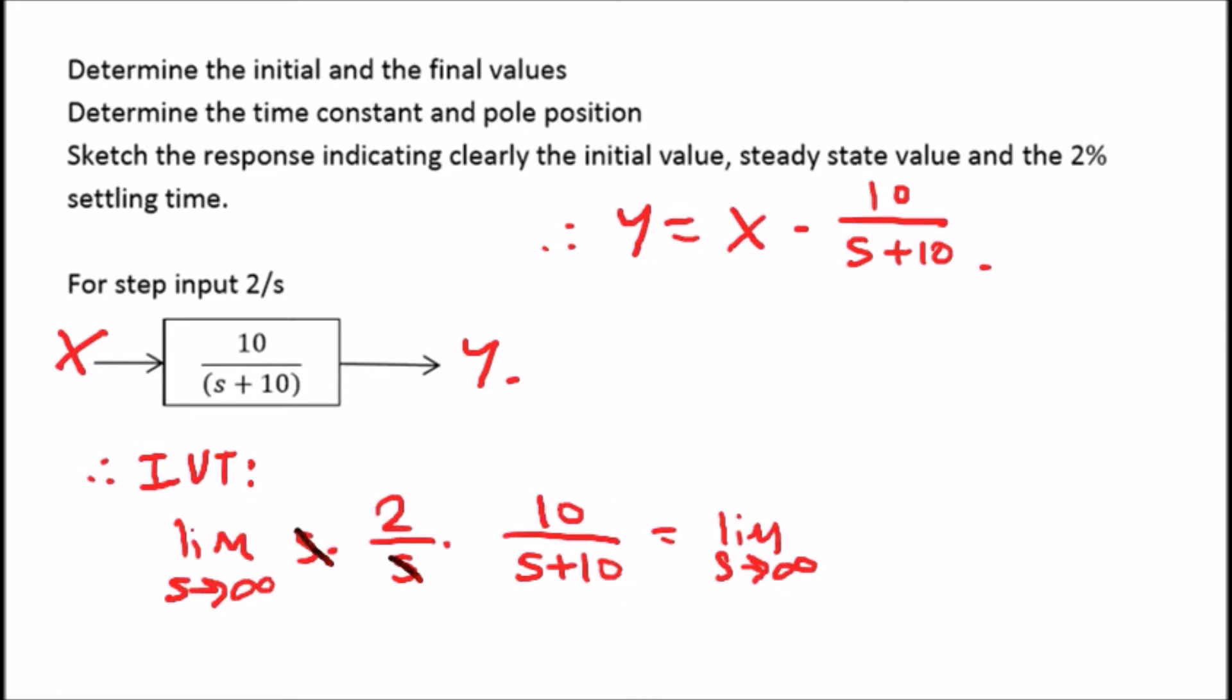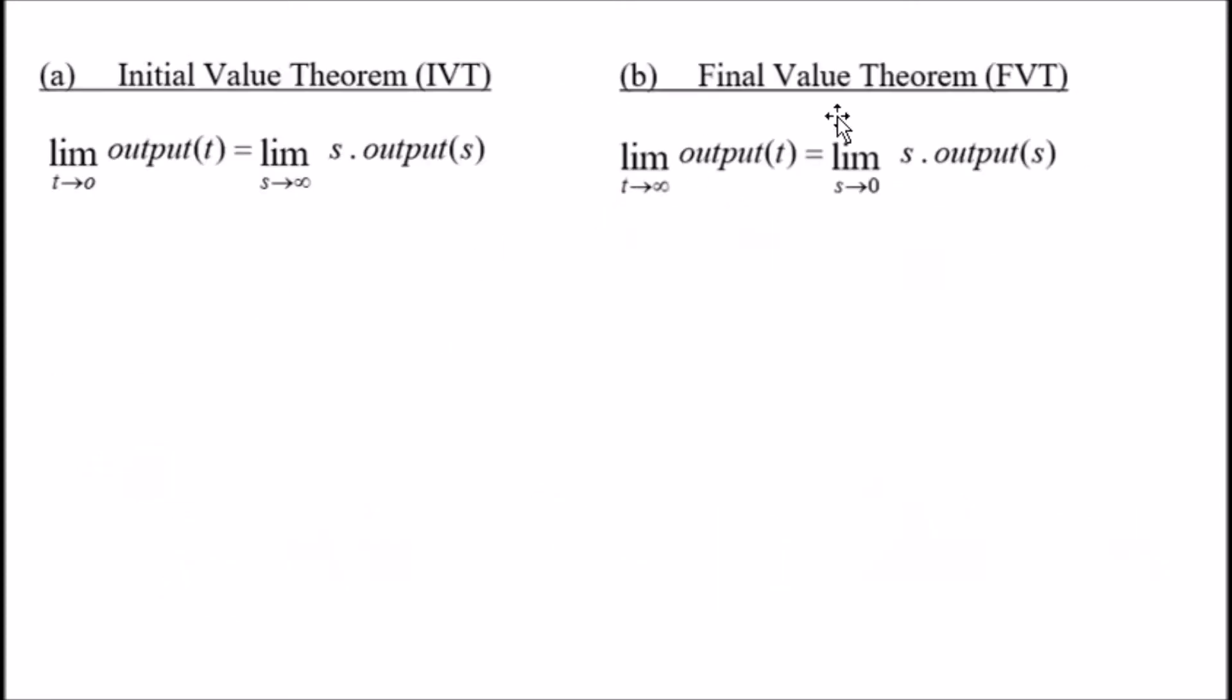That's the limit as s goes to infinity of 20 over s plus 10. All you need to know is when you set s to infinity, when you're dividing one over infinity, it's approaching zero, so it'll be 20 times zero, which is just zero. So the initial value is zero.